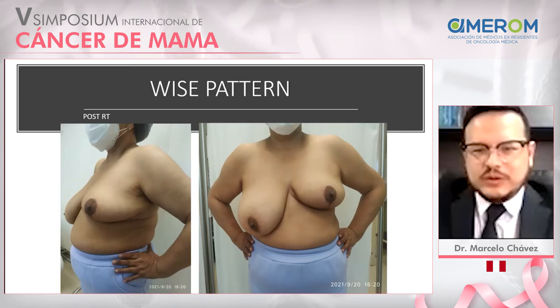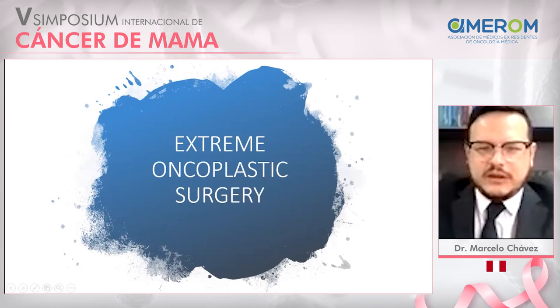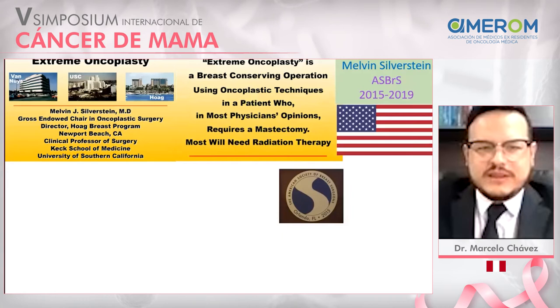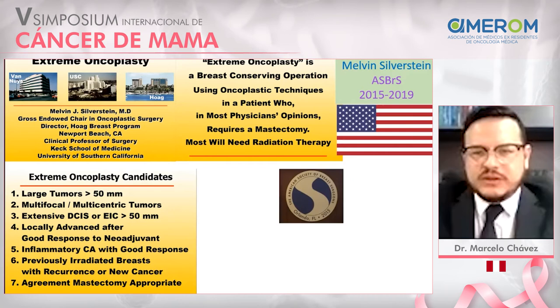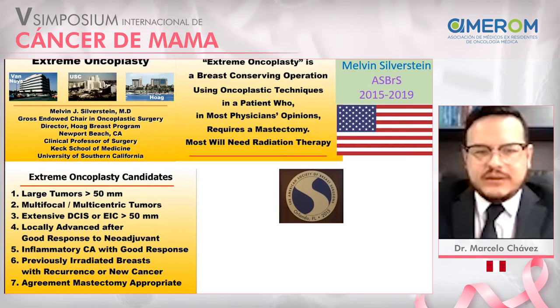What about extreme oncoplastic surgery? Extreme oncoplastic surgery was described by Melvin Silverstein in the USA as a breast conservation operation using oncoplastic techniques for patients who, in most physicians' opinions, would require mastectomy. Candidates for extreme oncoplastic surgery include large tumors over 5 centimeters, multifocal or multicentric disease, extensive DCIS, locally advanced disease with good response to neoadjuvant therapy, inflammatory cancer with good response, or oncoplastic surgery in a previously irradiated breast.